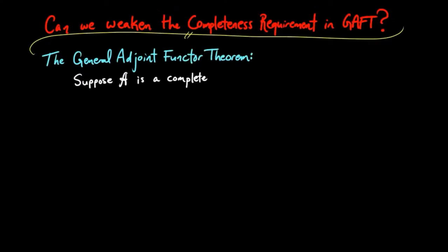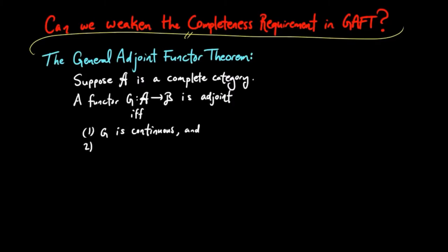Suppose A is a complete category. A functor G from A to B is adjoint if and only if: (1) G is continuous, and (2) G satisfies the solution set criterion.